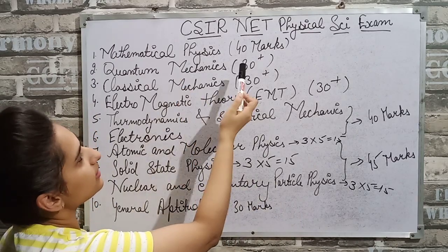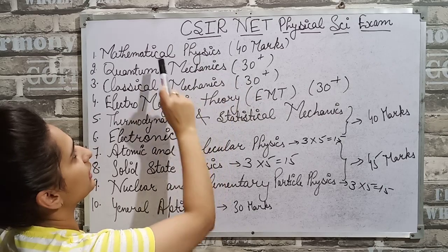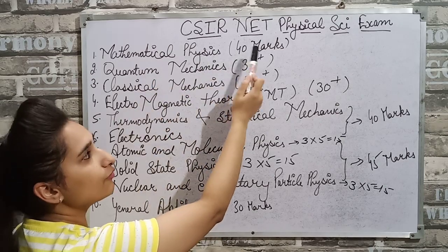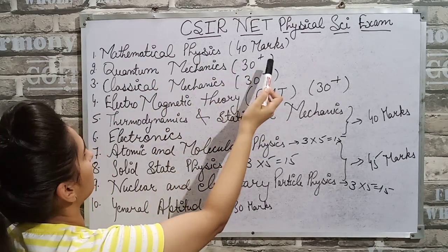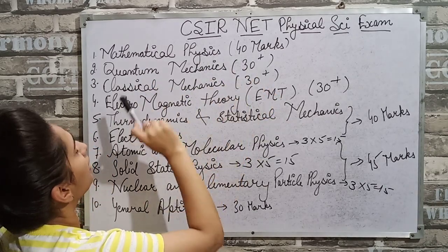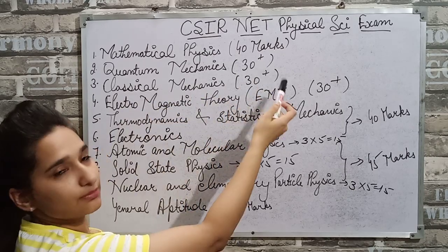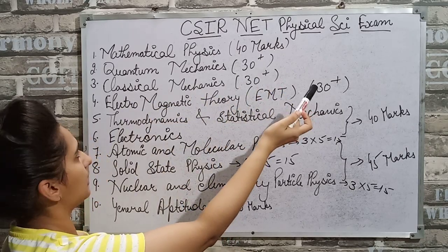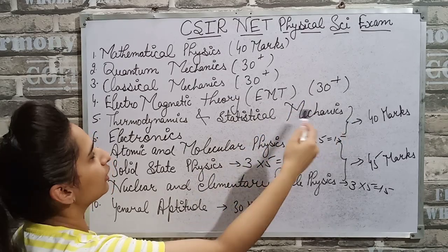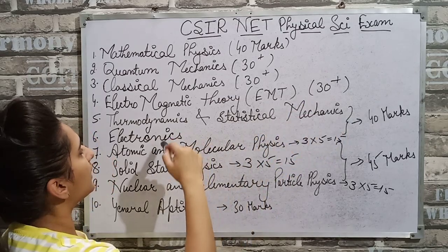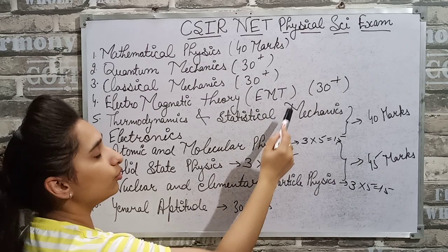Now we will see how many marks are in each subject. Mathematical Physics has 40 marks. Quantum Mechanics is 30 plus, Classical Mechanics is 30 plus, and Electromagnetic Theory is 30 plus.